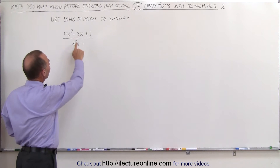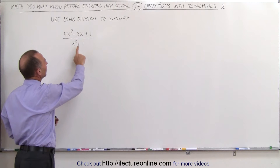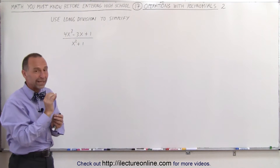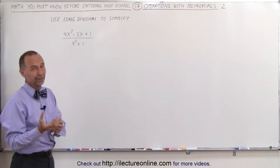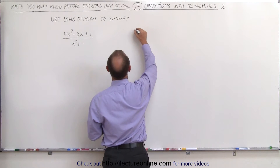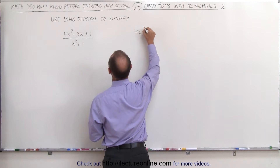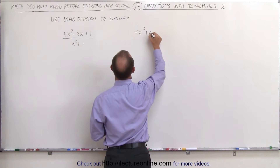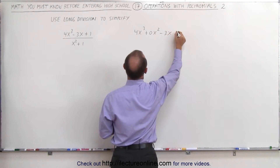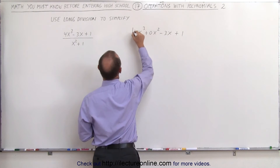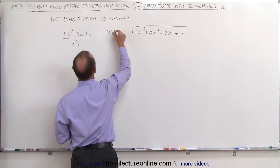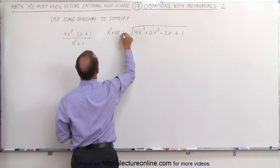Notice in the numerator there's an x-squared term missing, and in the denominator there's an x to the first power missing. So when we set up the long division, we want to make sure we include those missing terms by putting a zero in front of them. We're going to take 4x-cubed plus 0x-squared — that's the missing term — minus 3x plus 1, and divide it by x-squared plus 0x — again, that's the missing term — plus 1.